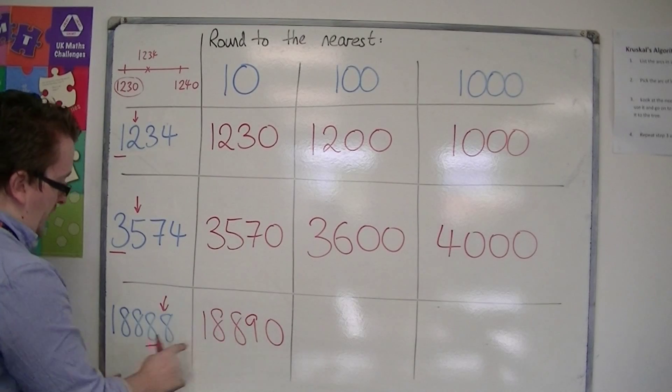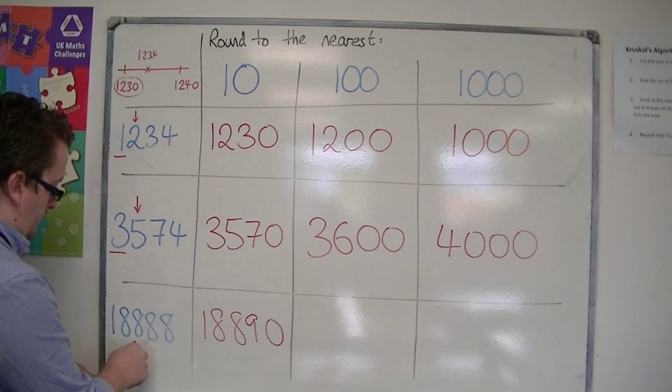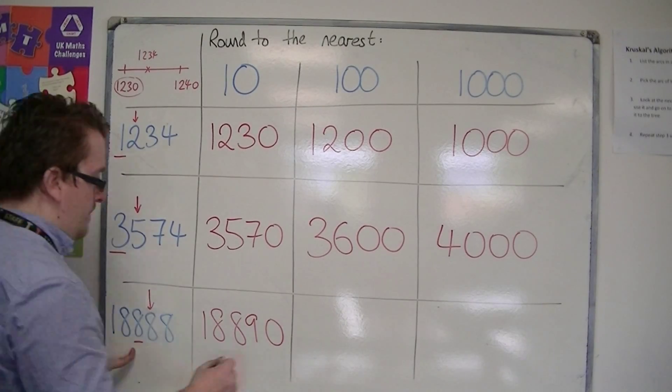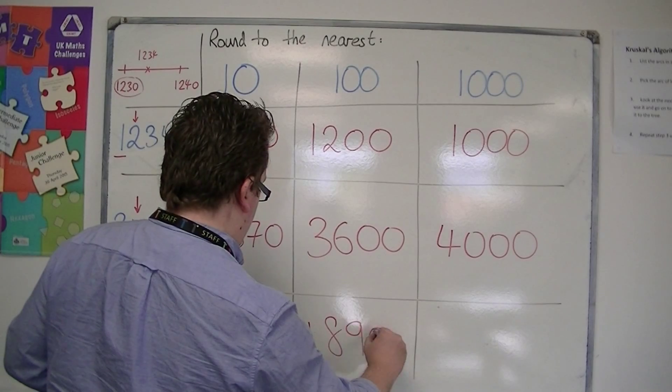Okay, rounding to the nearest hundred, we look at the hundreds column. One to the right. We round up again, so that's 18,900.